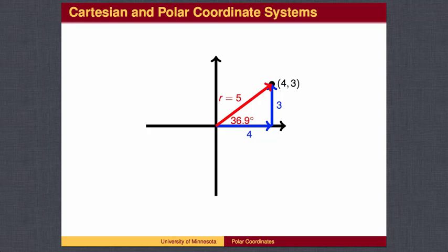If we let r be the distance from the origin to the point xy, then we can find r by the Pythagorean theorem. In this case, r squared equals 4 squared plus 3 squared. We can find the angle 36.9 degrees by using the inverse tangent.